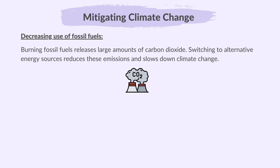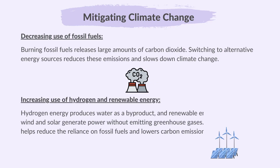Decreasing the use of fossil fuels: burning fossil fuels releases large amounts of carbon dioxide. Switching to alternative energy sources reduces these emissions and slows down climate change. Increasing use of hydrogen and renewable energy: hydrogen energy produces water as a by-product, and renewable energy sources like wind and solar generate power without emitting greenhouse gases.